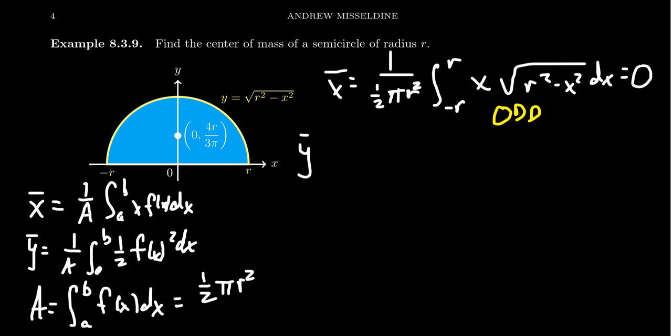Y-bar on the other hand is a little bit more complicated because we don't have a horizontal line of symmetry. That's what I'm trying to say here. So we have the one over the area, which is going to be two over pi r squared. We're going to go from negative r to r. And then we have one half f of x squared. So our function y equals the square root of r squared minus x squared. We're going to square that, which is actually quite fortunate for this situation, dx right here.